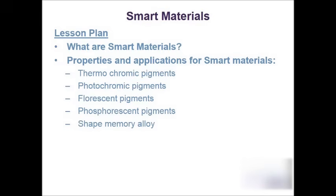The second smart material we're going to discuss is photochromic pigment. Anything to do with 'photo' is normally to do with light, and again 'chromic' is colour — so photochromic means light-colour pigments. These are pigments, dyes, or paints effectively that can change colour based on a light environment, whether it be sunlight or manufactured light from a candle or a light source of some sort.